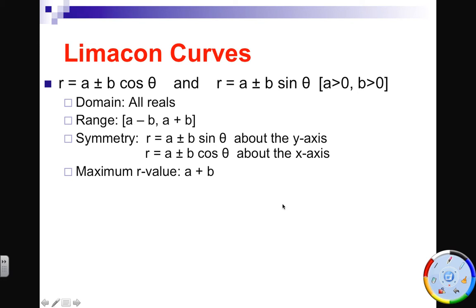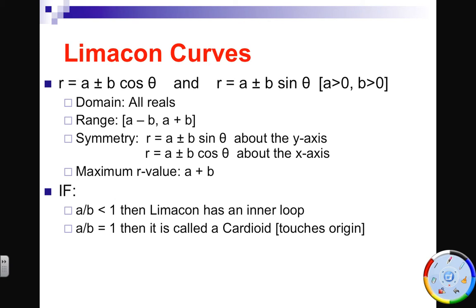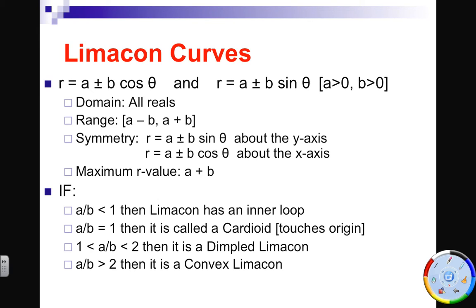The maximum distance from the origin that your graph will get is A plus B units. Big if here. If A over B is less than one, then we have an inner loop. There are three different types here. If A over B is equal to one, then it's called a cardioid. And if you kind of look at this word, it might look a little familiar because the first six letters is cardio. And cardio represents heart. So this one should look a little bit like a heart. And if A over B is between one and two, it's called a dimpled limaçon. Oh, sorry, I had four of them here. And if A over B is greater than two, then it's convex. I'm going to let you give a second here.